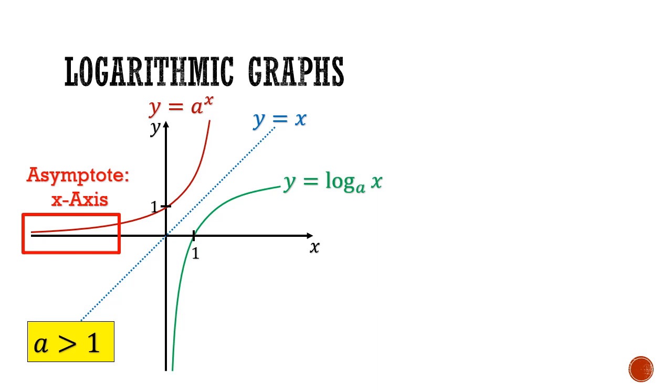Now just as how the exponential graph has an asymptote along the x-axis, the log graph has an asymptote along the y-axis. This is because as x approaches 0, the log graph tends to negative infinity. However, the graph will never reach the y-axis. It's like asking the question a to the power of what gives me 0. That is just not possible.